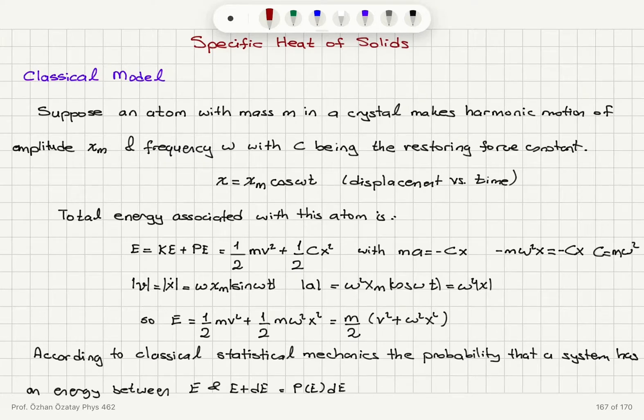Let's say that we have an atom with mass m in a crystal that makes harmonic motion of amplitude xm and angular frequency omega, and c, the force constant. We can write this oscillation as x equals xm cosine omega t. This is the displacement from the equilibrium position versus time.